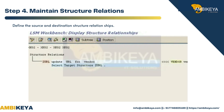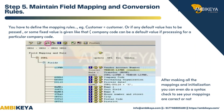Step 4: Maintain Structure Relations — define the source and destination structure relationships. Step 5: Maintain Field Mapping and Conversion Rules — define the mapping rules, for example customer equals customer, or pass a default or fixed value such as company code, which can be a default value when processing for a particular company code. After making all mappings and initialization, you can perform a syntax check to verify your mappings are correct.